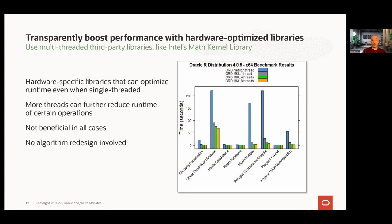As shown in the figure, hardware-specific libraries can optimize runtime. Using an optimized library can have dramatic performance implications even when running single-threaded, such as for matrix multiplication. If we add more threads, we can do better. But also notice that not all operations see an improvement.